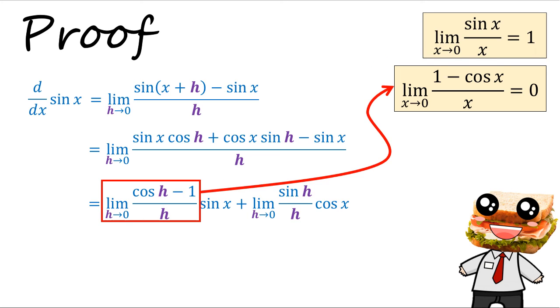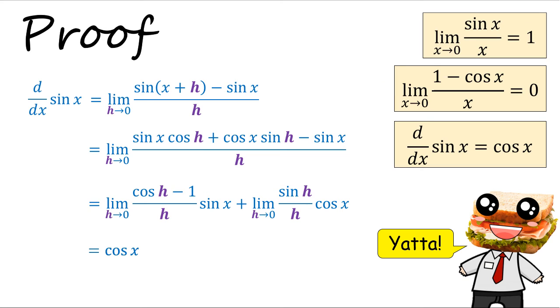Now for the other limit, this will be the same as the negative of the limit that we discovered earlier. So the limit of cosine h minus 1 over h is going to give us 0, so the sine x will vanish. So the final result is just cosine x. So let's park this result. We differentiate sine x, we're going to get cosine x.